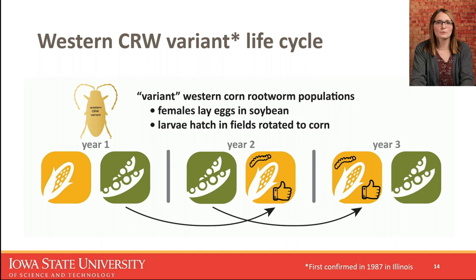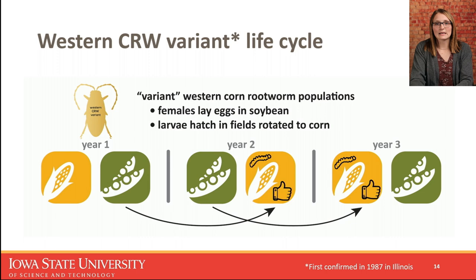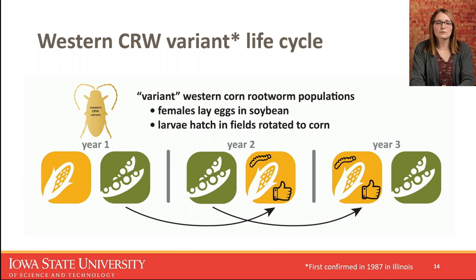The western corn rootworm has adapted to crop rotation in a different way — more of a behavioral adaptation. This one is often called the soybean variant of the western corn rootworm. Instead of the females laying eggs in corn as expected, they instead leave the corn field to lay eggs either in soybean or some other nearby field. They are essentially losing their fidelity to corn and laying eggs in a different field, hoping corn will be planted there the following year. This was first confirmed in 1987 in Illinois, and it was really into the 1990s that researchers figured out exactly what was going on.